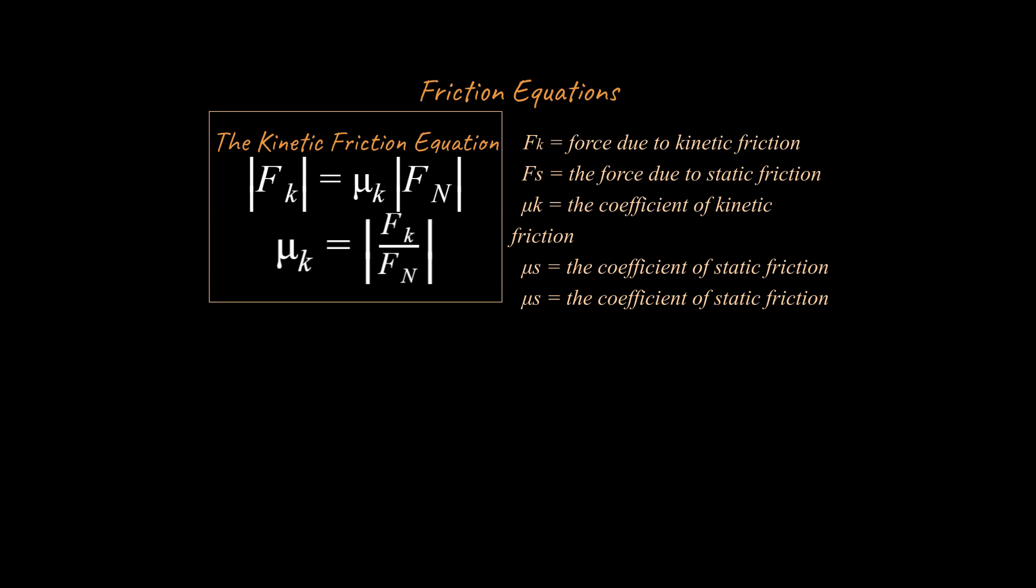And they take a tremendous amount of force to be able to get them to slide past each other. Whereas if you had something like ice on top of ice, they would slide past each other very, very easily. And so this μk would have a very low amount for ice on ice or a very high amount for like rubber on concrete.